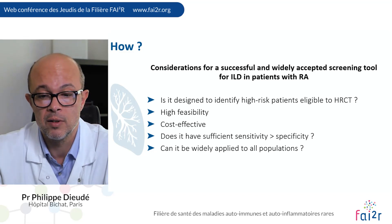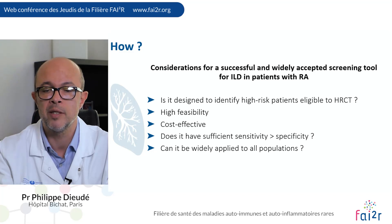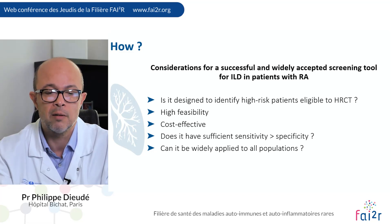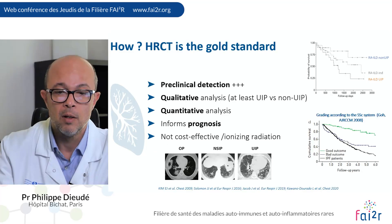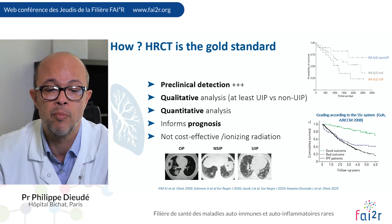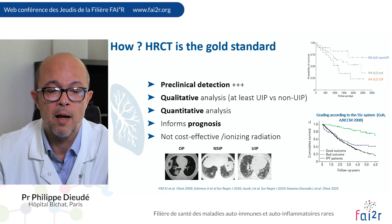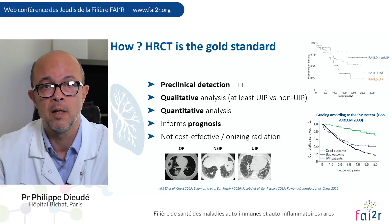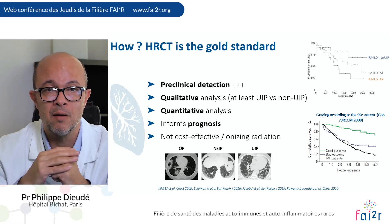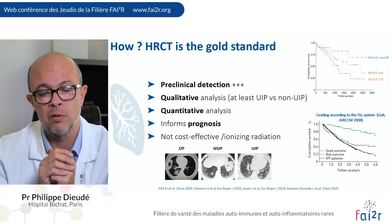Now let's see the tools that can allow us to identify patients having subclinical ILD. The considerations for a successful screening tool include: is it designed to identify high-risk patients eligible to HRCT, is it cost-effective, does it have sufficient sensitivity, and can it be widely applied to all populations? Today, HRCT should be considered as the gold standard, allowing both diagnosis with preclinical and subclinical detection, and also informing prognosis through qualitative analysis — classifying patients as having UIP or non-UIP disease — and quantitative analysis, meaning the extent of the ILD.